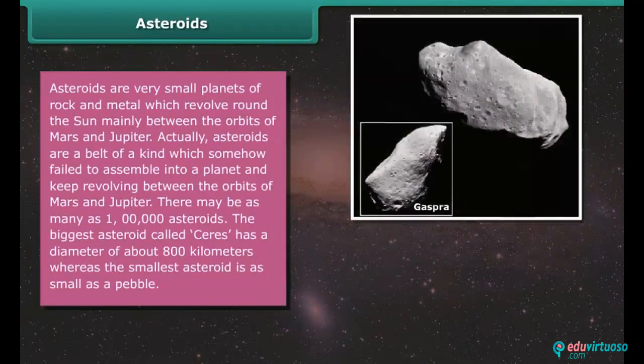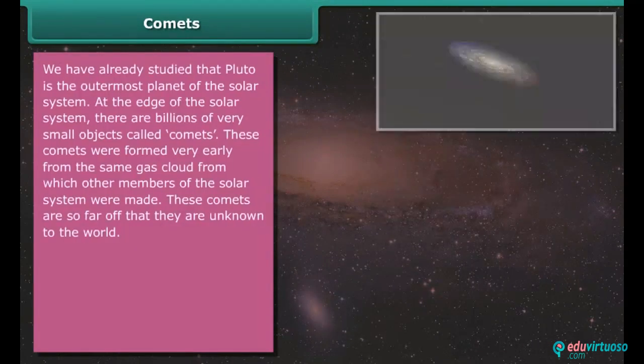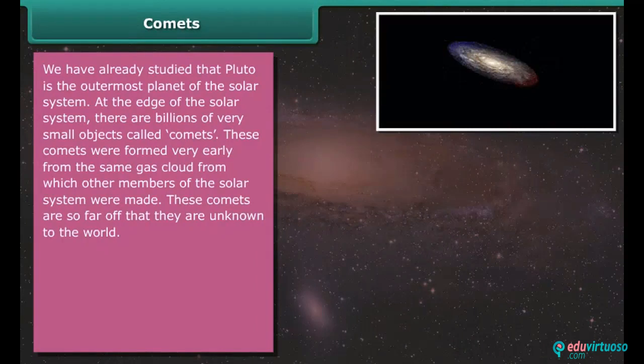Asteroids. Asteroids are very small planets of rock and metal which revolve around the sun mainly between the orbits of Mars and Jupiter. Actually, asteroids are a belt of a kind which somehow fail to assemble into a planet and keep revolving between the orbits of Mars and Jupiter. There may be as many as one lakh asteroids. The biggest asteroid called Ceres has a diameter of about 800 kilometers, whereas the smallest asteroid is as small as a pebble.